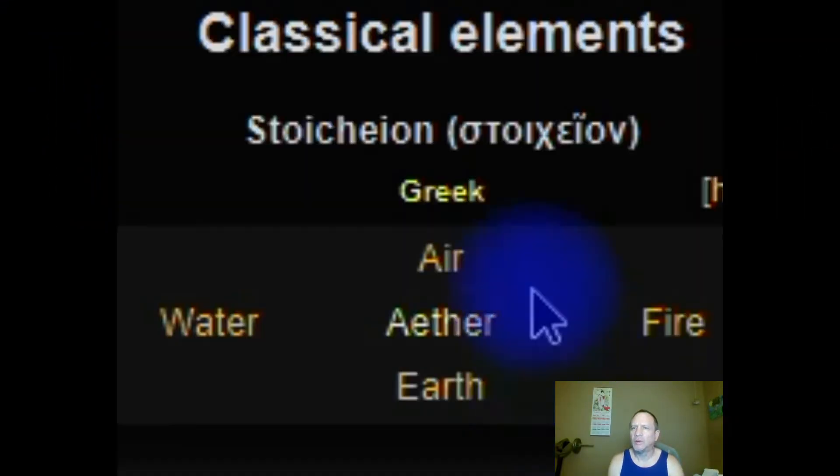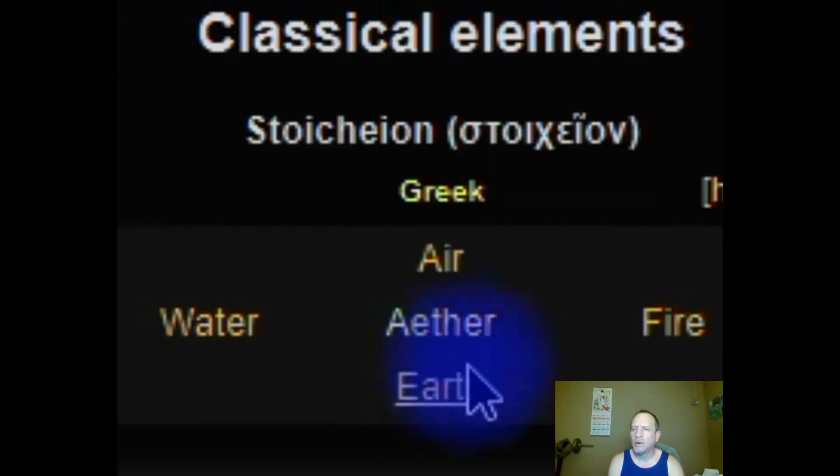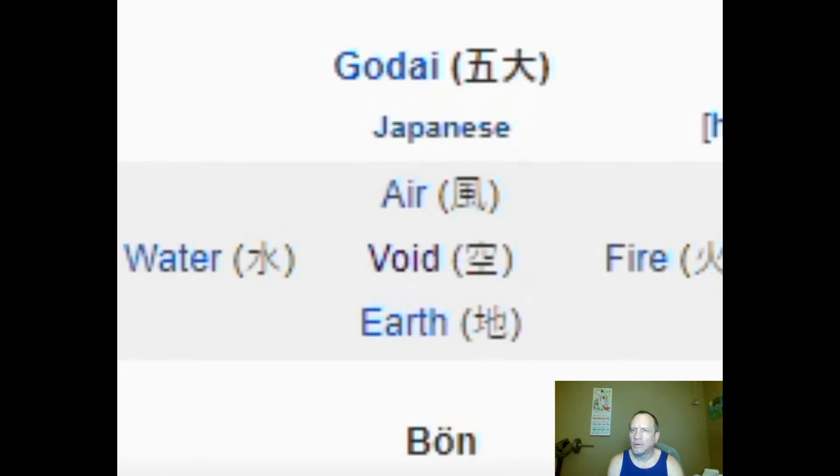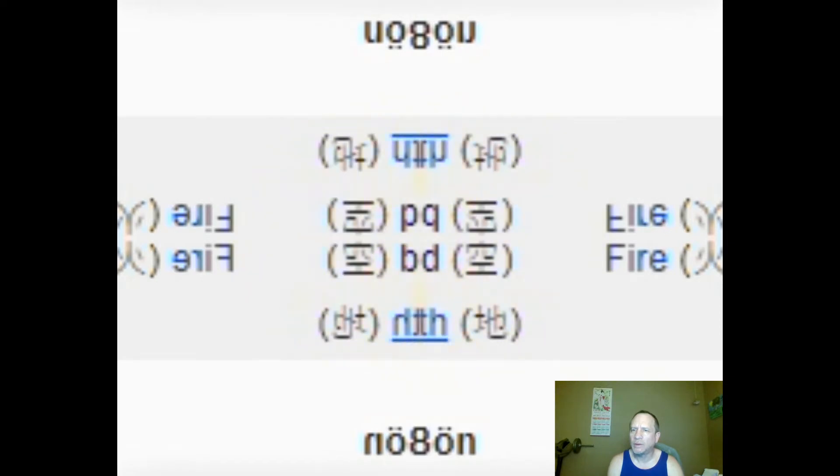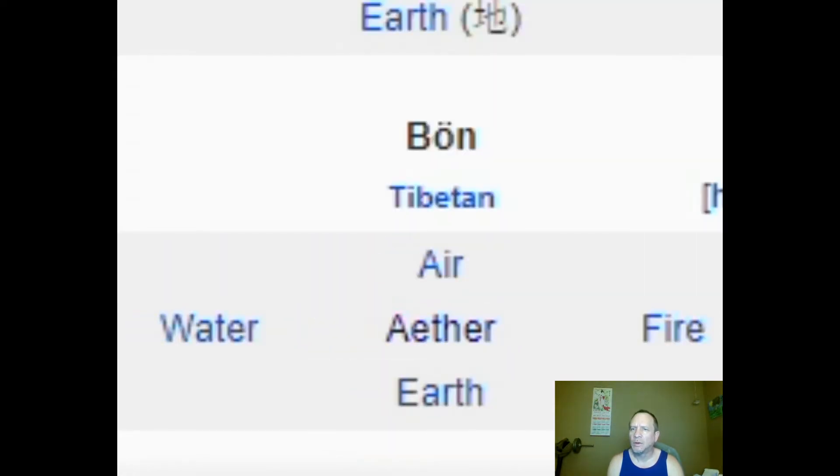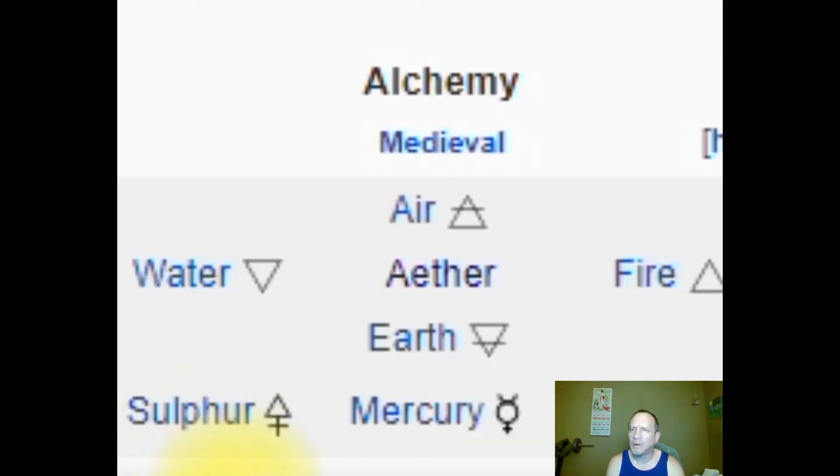The classical elements in Greek: air, fire, earth, and water, and the ether that held them all together. The Japanese had these same four elements held together by a void. In Tibetan, the four elements were held together by the ether as well.